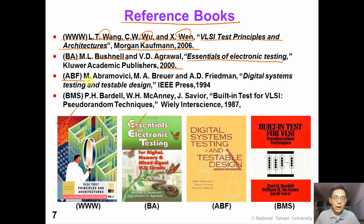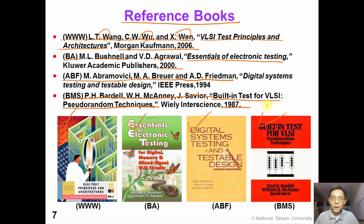The third book is by Abramovici, Breuer, and Friedman — Digital System Testing and Testable Design, published by IEEE in 1994. And the last textbook, BMS, by Bardell, McAnney, and Savir, is titled Built-in Test for VLSI: Pseudo-Random Techniques, published in 1987. Although this is a pretty old textbook, it covers many important topics about built-in self-test.